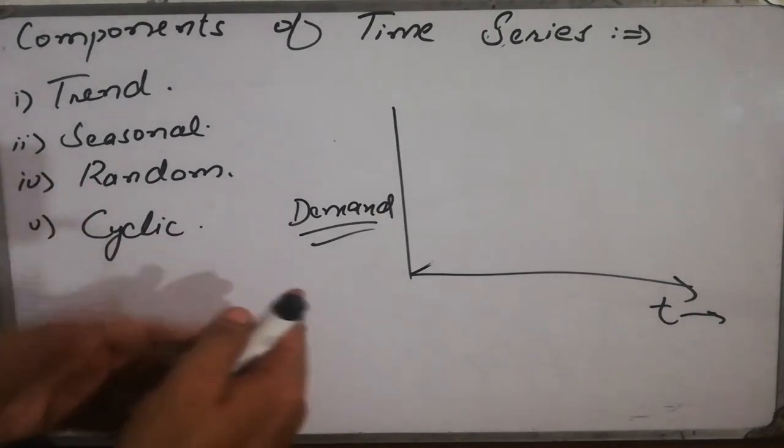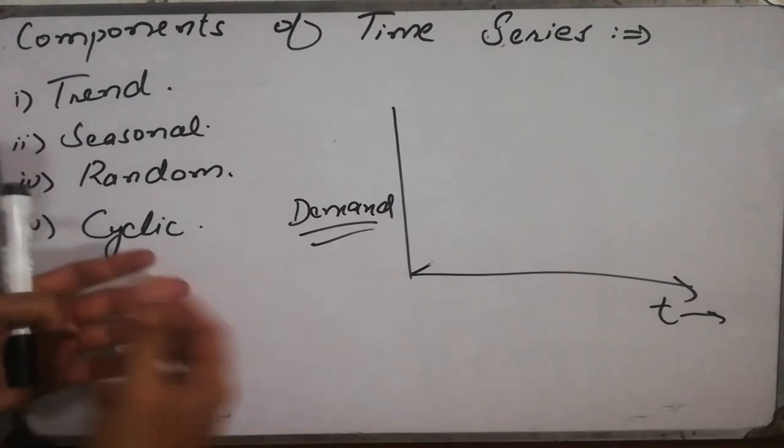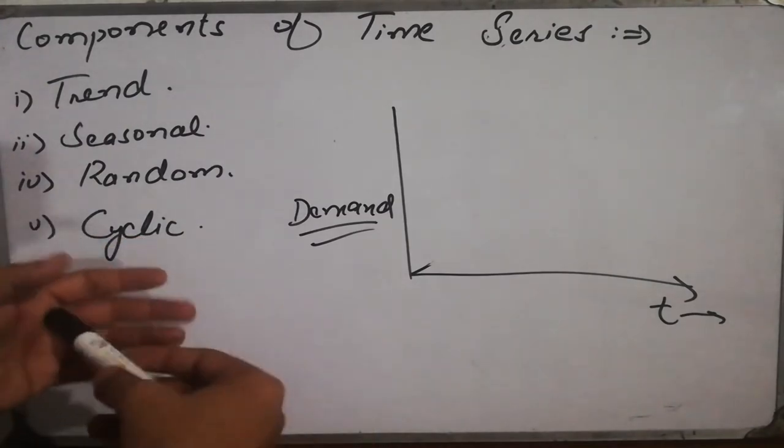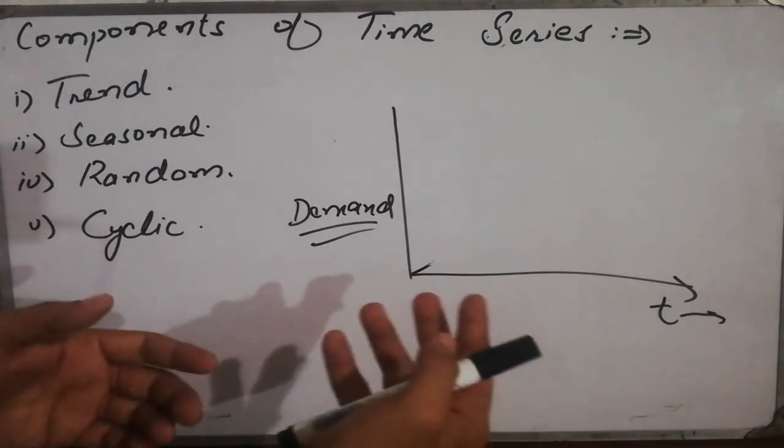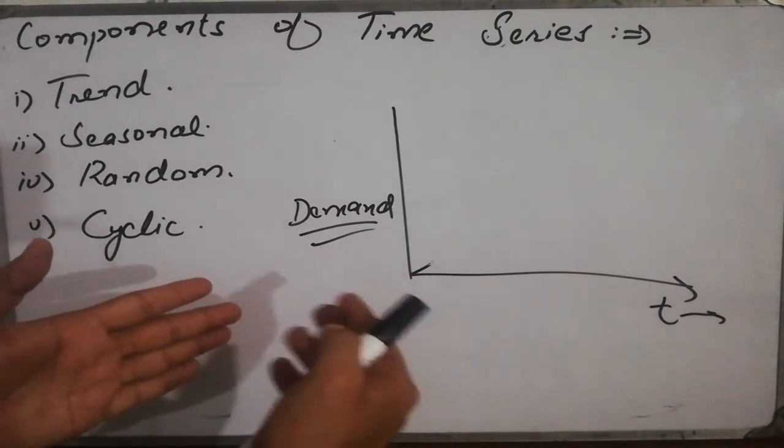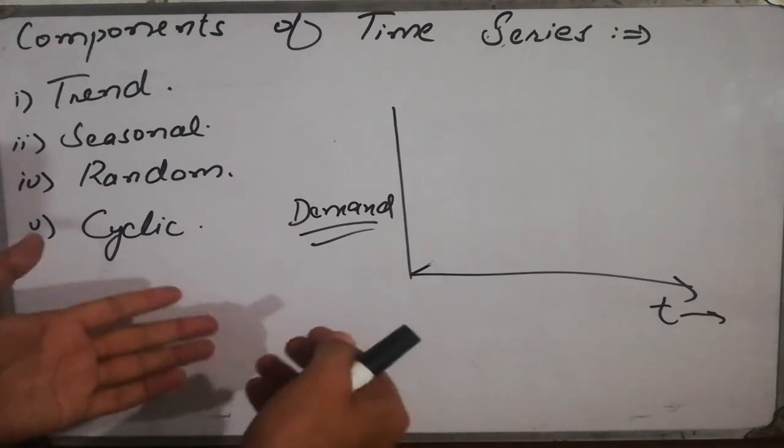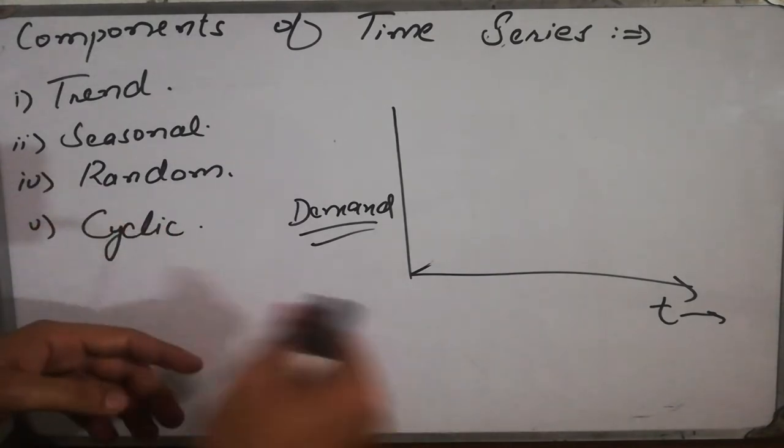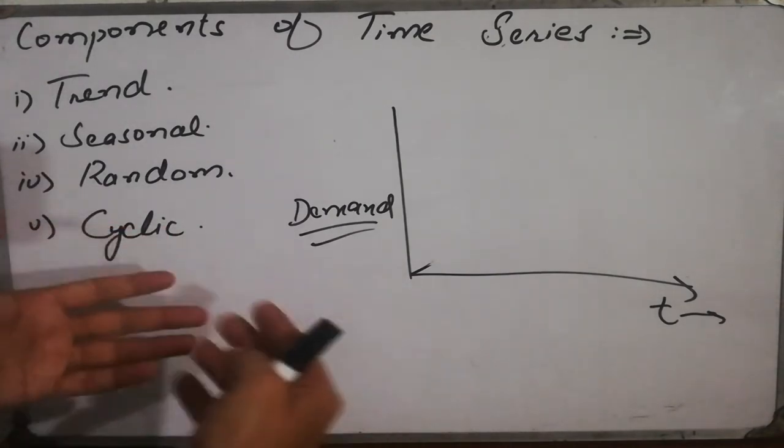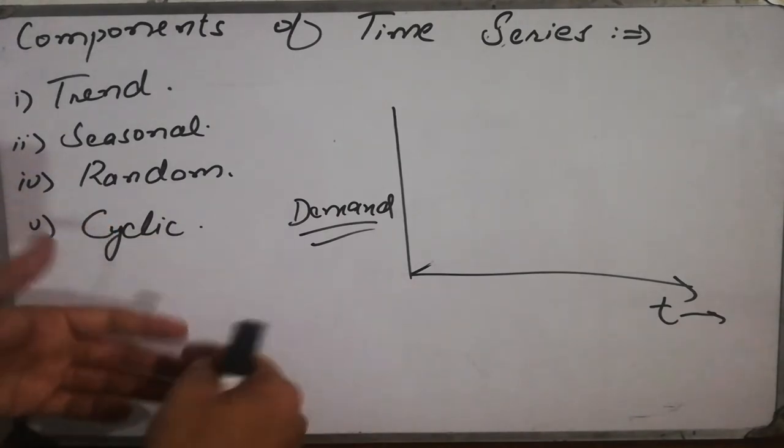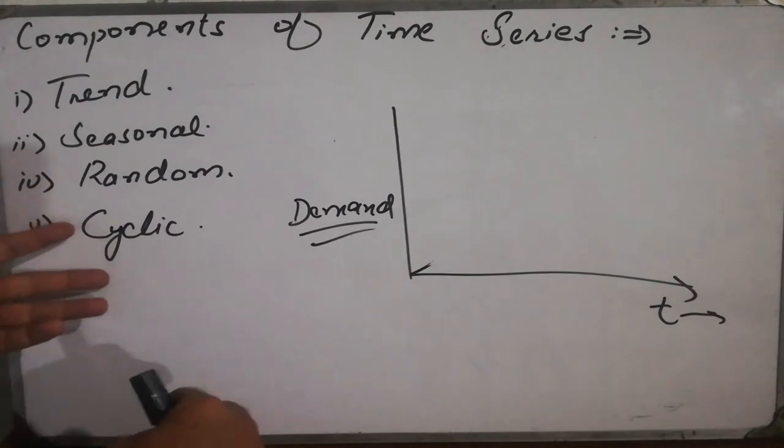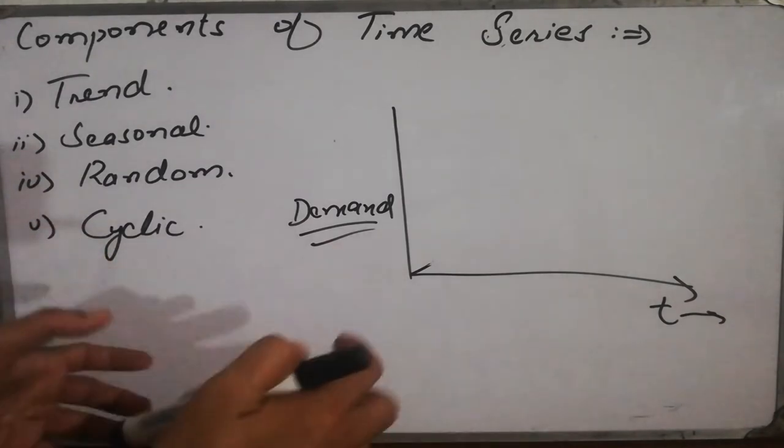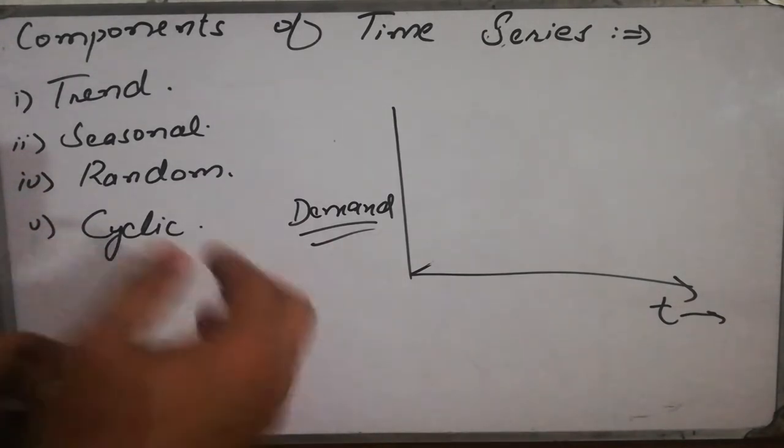Next thing is the random variation. So the demand might vary randomly that it has no reason, it might be for a certain reason, but it is something that we cannot predict. That at that time the demand would vary in a certain way. So it is just a random variation due to certain reasons, might be due to political issues, it might be due to some other clashes as well.